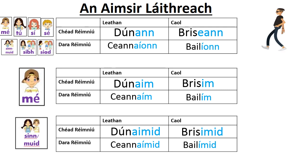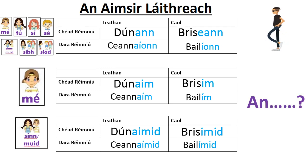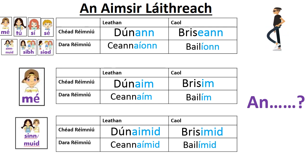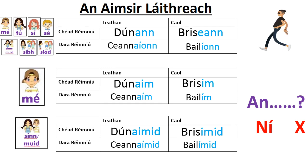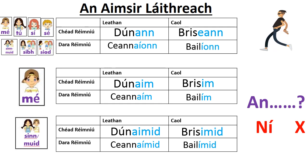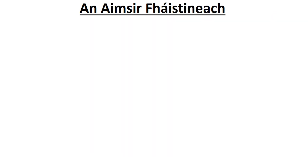The slight difference in the aimsir láithreach: to ask a question, it's 'an', not 'ar'. And the negative is 'ní'.